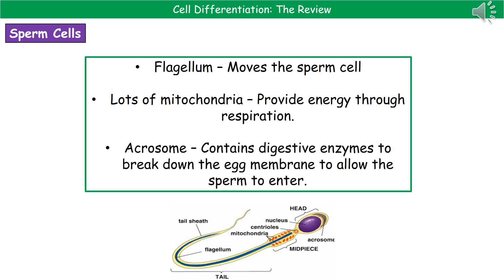The third adaptation it has is right at the front of the head — a structure called an acrosome. The acrosome is basically a little pouch of digestive enzymes. They're vital because when that sperm is lucky enough to reach the egg, it's got to have a way to get inside. It does that by releasing those digestive enzymes from the acrosome onto the membrane of the egg to gain entry, and therefore the nucleus of the sperm can join with the nucleus of the egg.